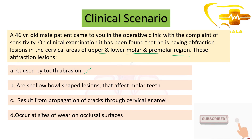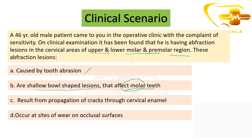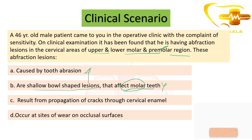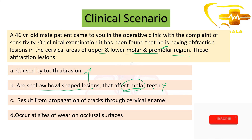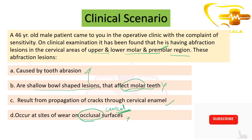Now analyzing the options: Are these lesions caused by tooth abrasion? They have not specifically stated that, so we can't confirm. Are they shallow bowl-shaped lesions affecting molar teeth? Abfraction lesions can be saucer-shaped, but the question also mentions premolars, so this option is incomplete. Do they result from propagation of cracks through cervical enamel? Yes — that is true and accurate. Do they occur on occlusal surfaces? No, they occur on cervical areas. Therefore, the closest correct answer is option C: they result from propagation of cracks through cervical enamel.